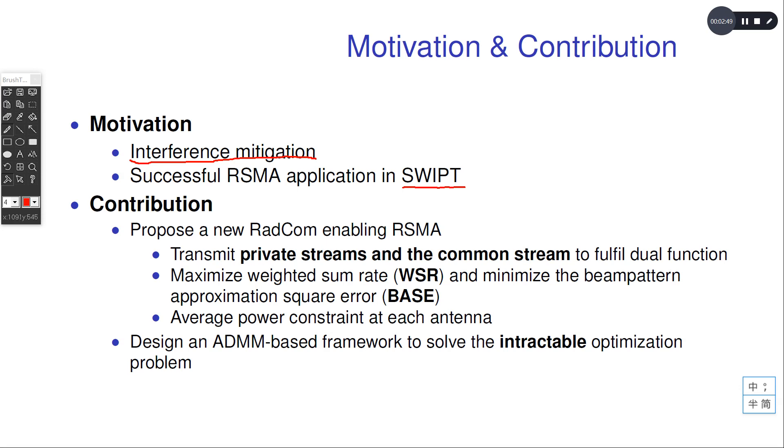It works as a base station communicating with downlink users, and has also a co-located MIMO radar detecting targets with the desired beam pattern. This system transmits private streams and the common stream to fulfill the dual function.